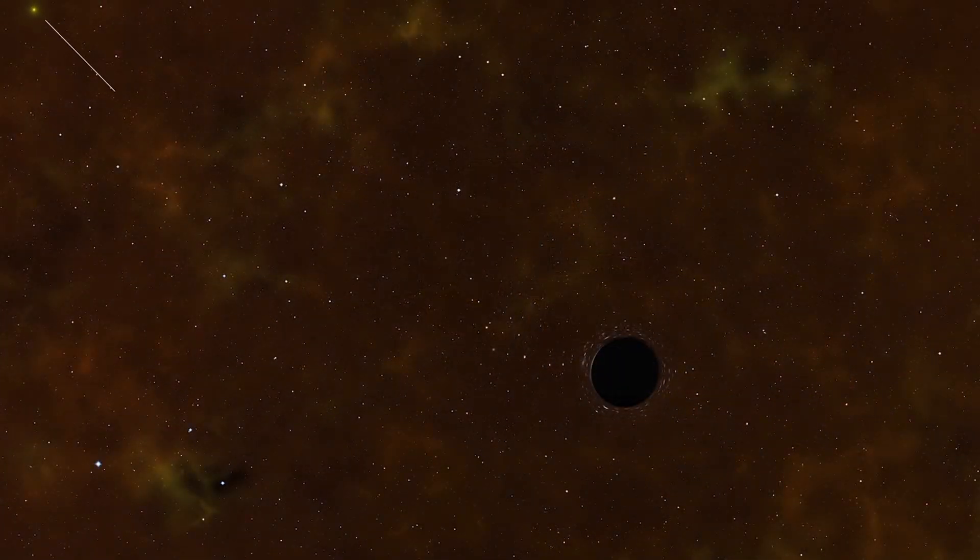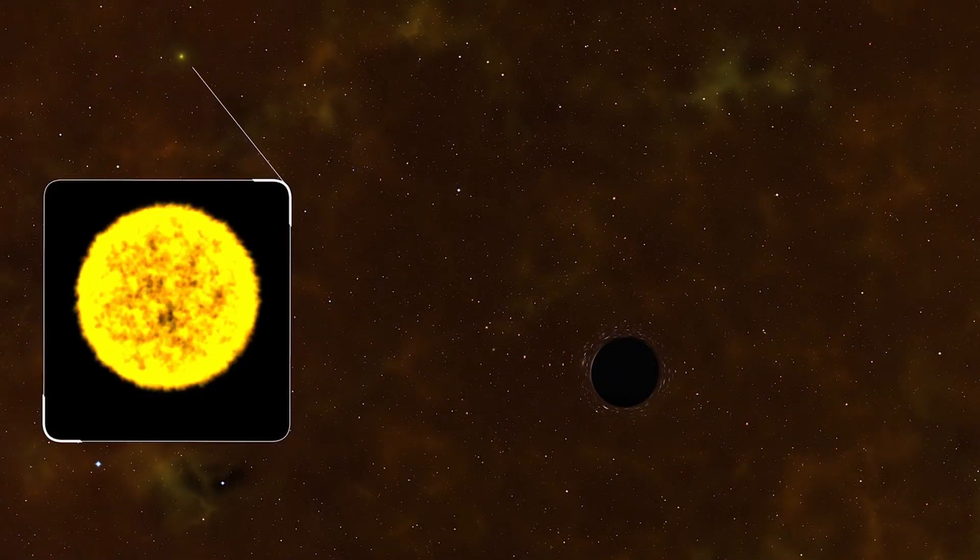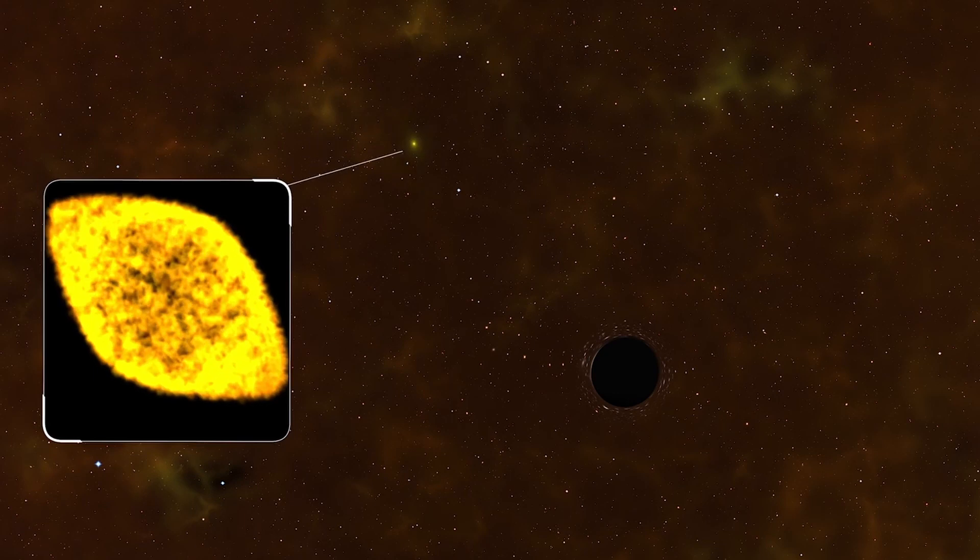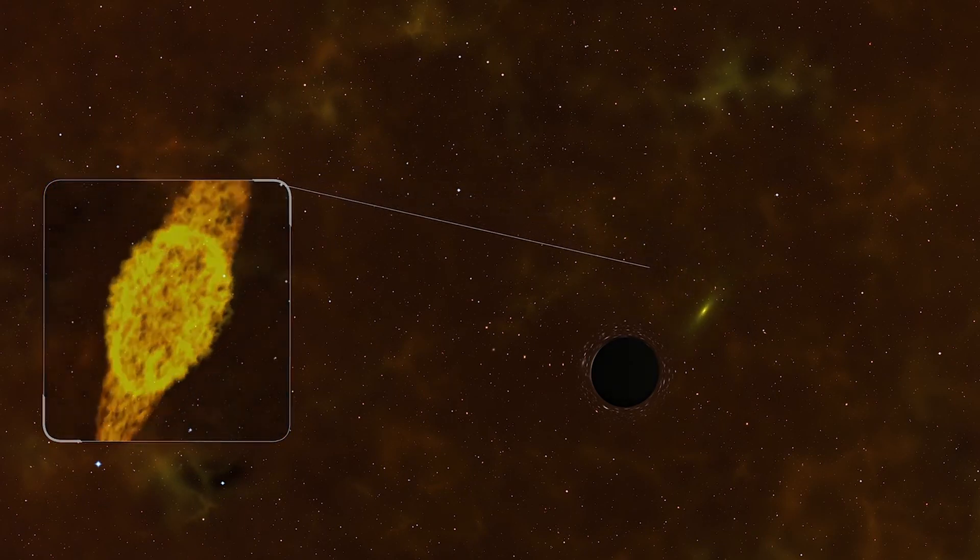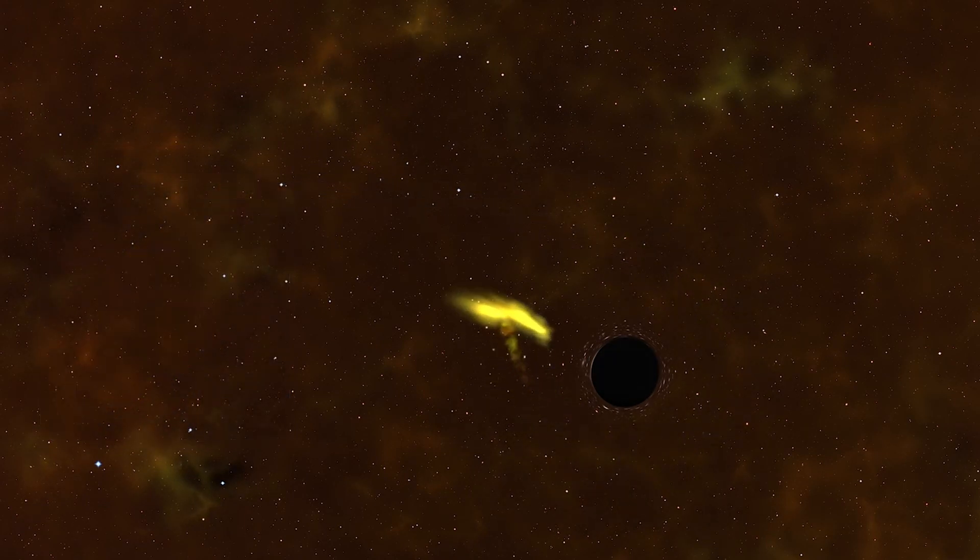Scientists observed fluctuations in the luminosity of this star. This is because the star was orbiting the tiny black hole.